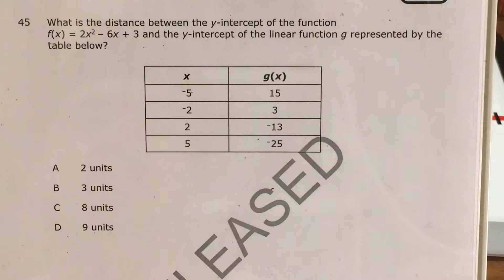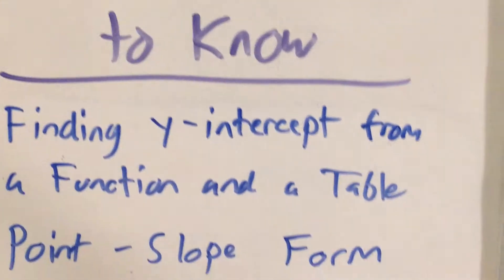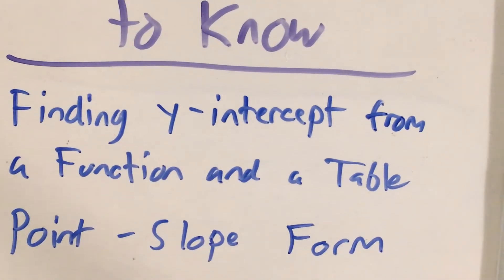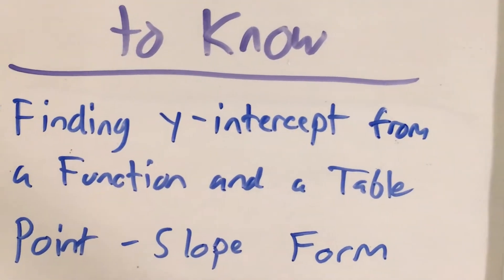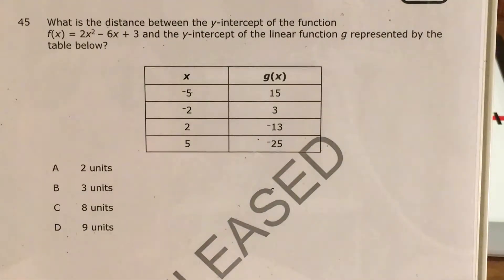The two big skills this question tests are finding a y-intercept from both a function and a table. One way to get a y-intercept from a table is through using point-slope form. Let's get started by finding both y-intercepts.